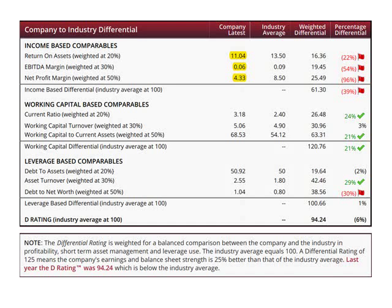For each ratio, fiscal checkup lists the company's latest value, compares it to the industry average, and then calculates the weighted differential. If the company was operating exactly at the industry average, then the return on assets weighted differential would be 20, the EBITDA margin would be 30, and the net profit margin would be 50, for a total of 100. The final column is simply the differential as a percentage.